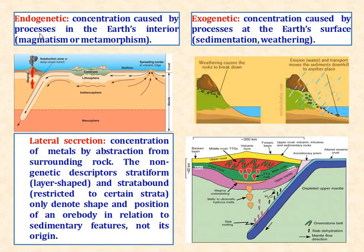Endogenetic concentration is caused by processes in the earth's interior, that is magmatism or metamorphism. Exogenetic concentration is caused by processes at the earth's surface, that is by sedimentation or weathering processes. Lateral secretion is the concentration of metals by abstraction from surrounding rock.